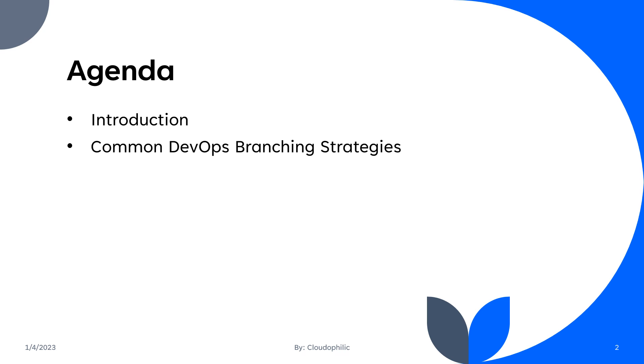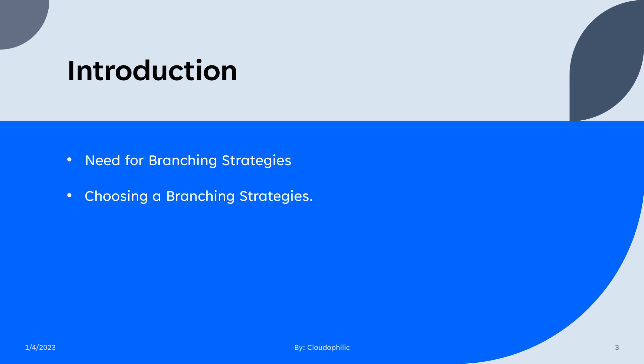The need for branching strategies: a properly implemented branching strategy will be the key to creating an efficient DevOps process. DevOps is focused on creating a fast, streamlined, and efficient workflow without compromising the quality of the end product.